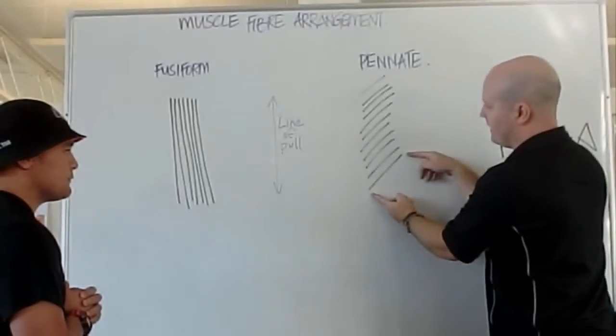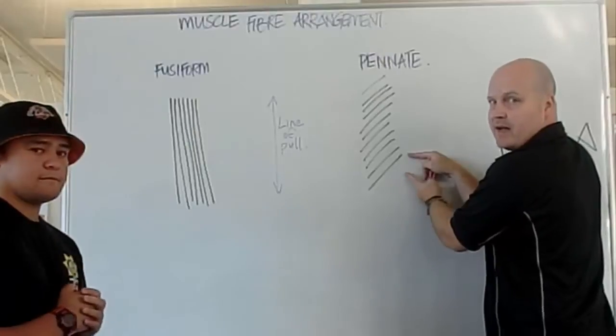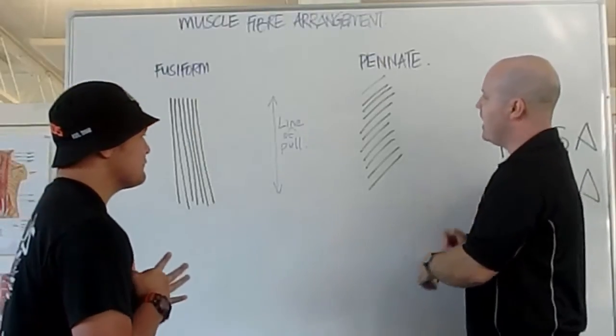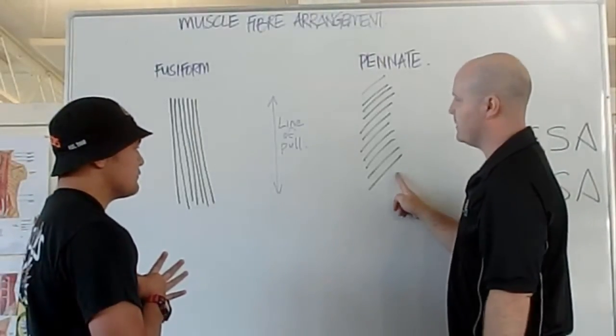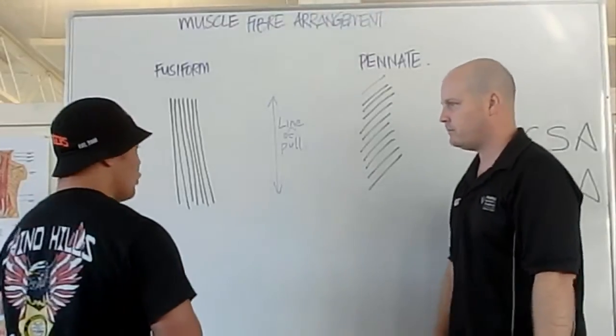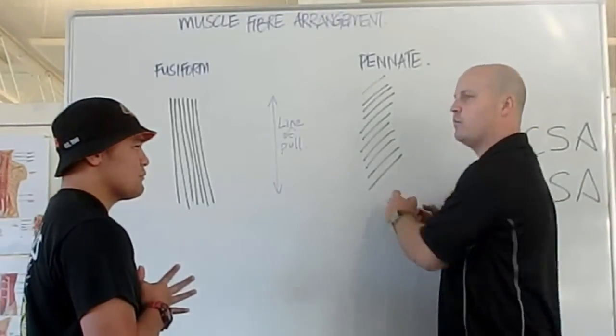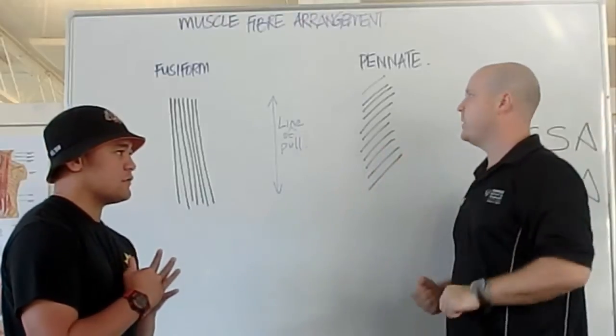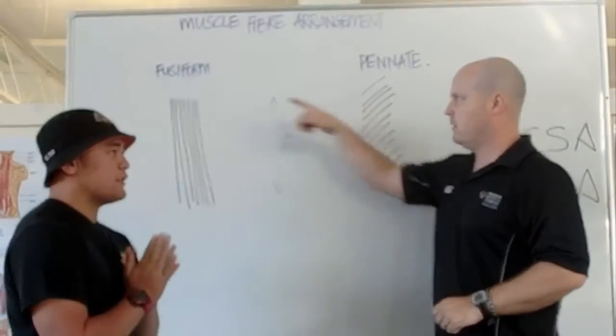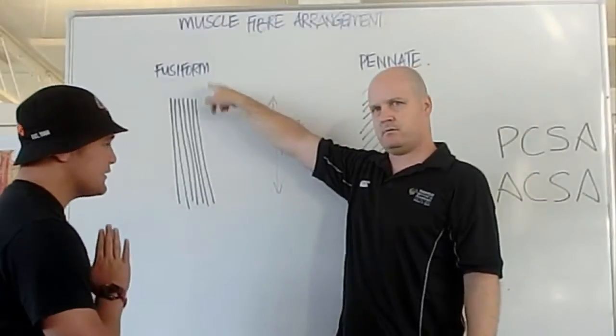Whereas pinnate, they don't shorten as much, they're not going to be as fast. But how many muscle fibres do we get in the pinnate muscle compared to fusiform? More. So the more pinnate fibres we have, the stronger we can be. So pinnate is good for strength, fusiform good for speed.